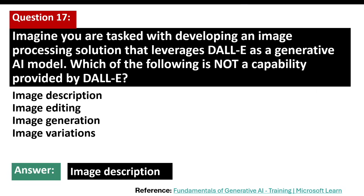DALL-E is designed to create images based on natural language prompts. By interpreting detailed textual descriptions, DALL-E generates corresponding visual representations. This powerful tool leverages deep learning techniques to produce highly realistic and imaginative images. The capabilities of DALL-E include image generation, image editing, and image variation. Image description is not a capability included in the DALL-E model.